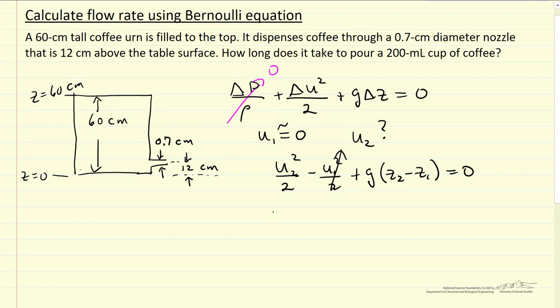So we can substitute numbers in. We're going to solve for U2 squared as 2G, well delta Z. In this case is 60 minus 12 centimeters, and so all this becomes two times 9.81 meters per second squared times 48 centimeters. Of course, the units are such we're going to have to convert, so let's do that.